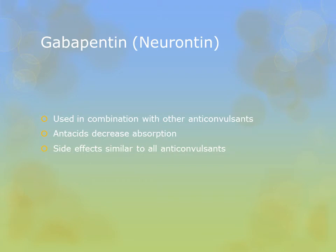Side effects of gabapentin are similar to all anticonvulsants — sedation, drowsiness, and blurred vision. With all anticonvulsants, we want to get a baseline neuro assessment: alertness, personality, and behaviors so we can observe for changes. Alcohol should be avoided with all anticonvulsants, as any central nervous system depressant will compound the anticonvulsant's effects and cause more CNS depression.